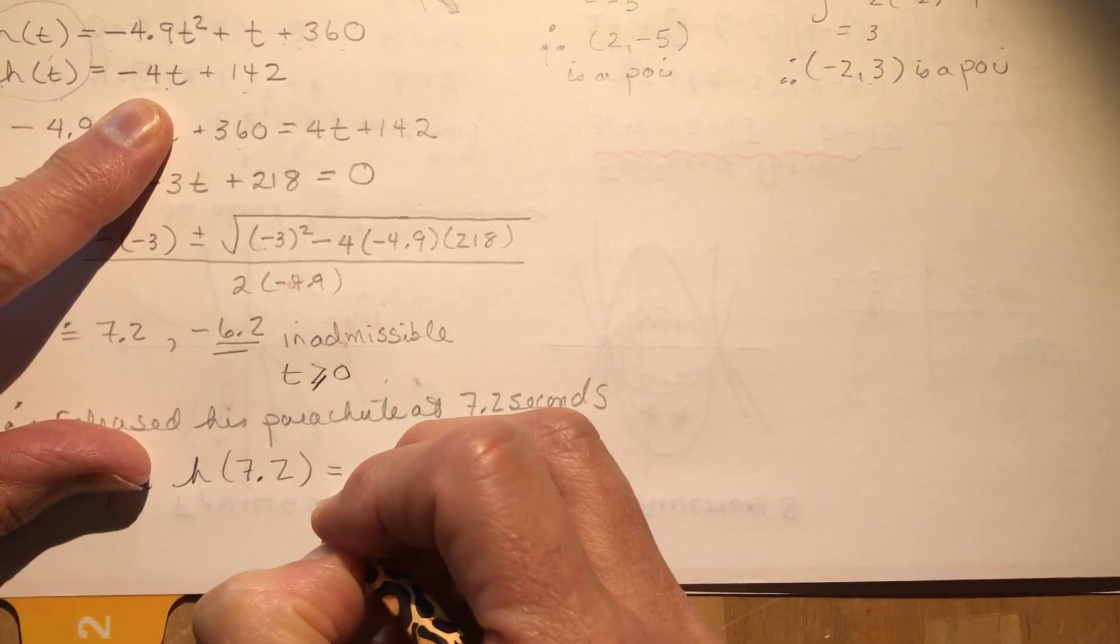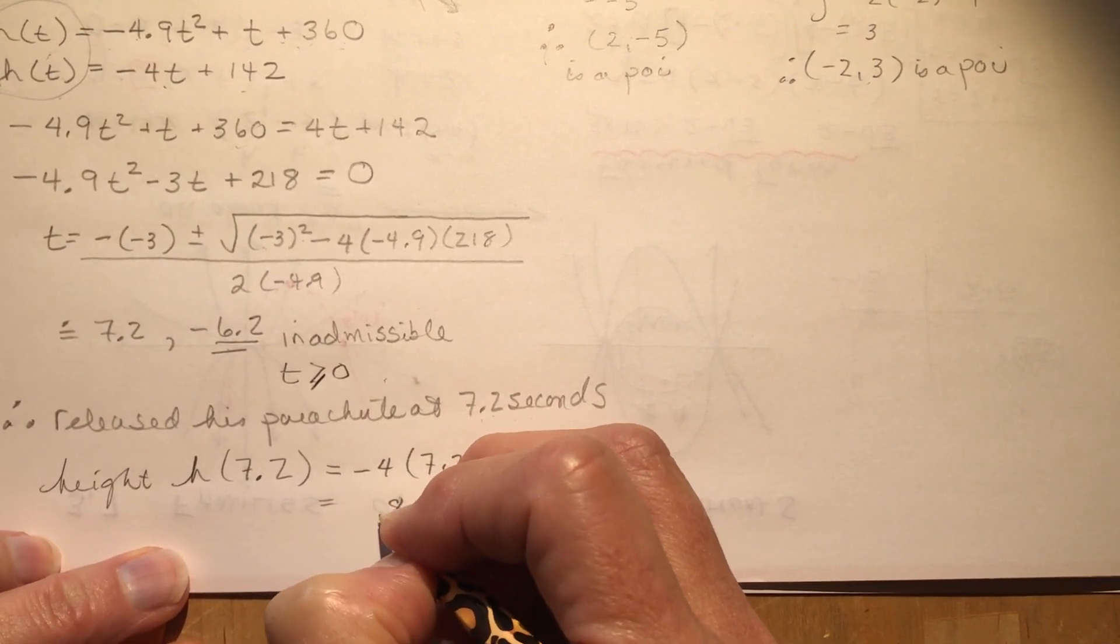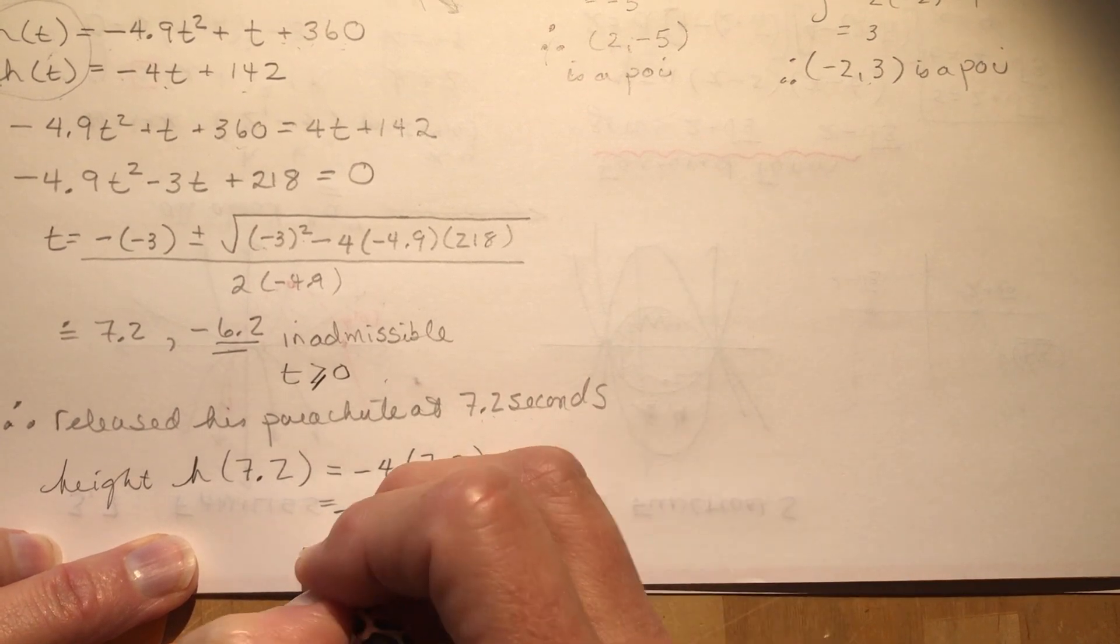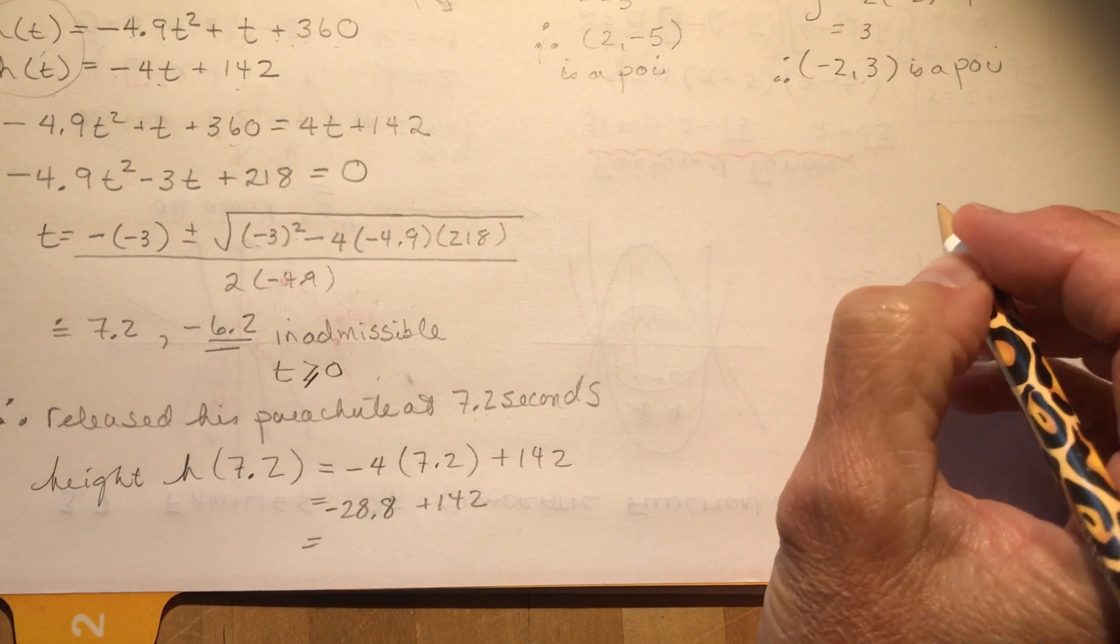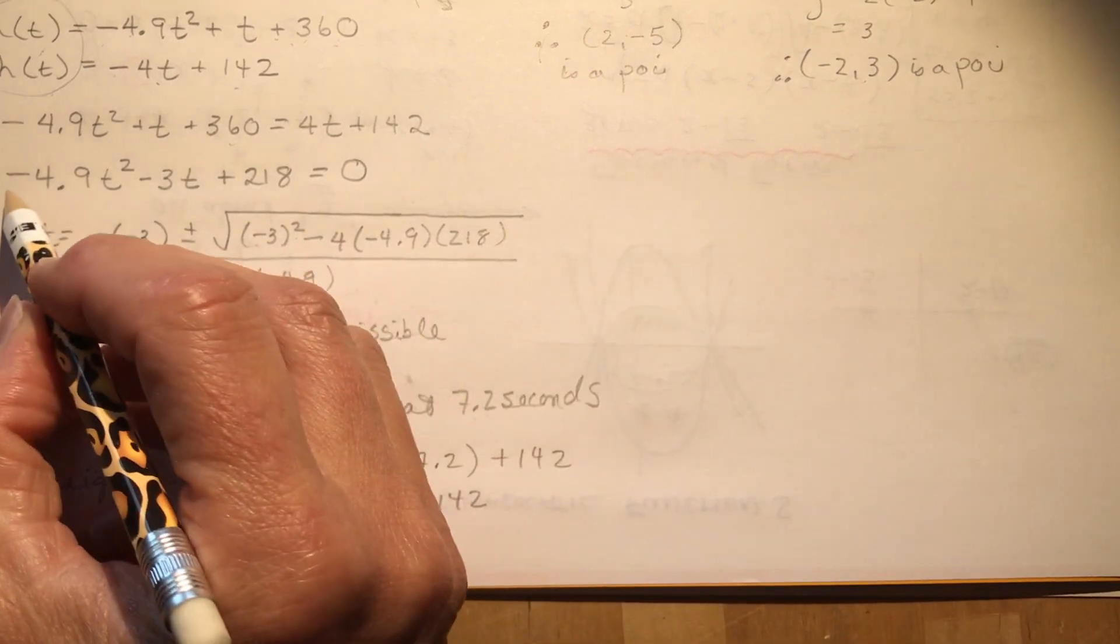I could probably even do this in my head. 4 times 7.2, that's 28.8 and it's negative, plus 142. So you can finish that. Okay, but what I wanted to point out, one more thing before I let you go, and that is, how can we tell how many solutions there would be if this was not a word problem?